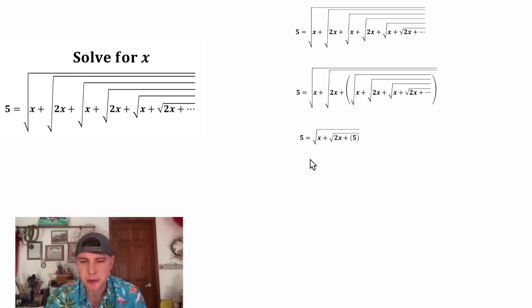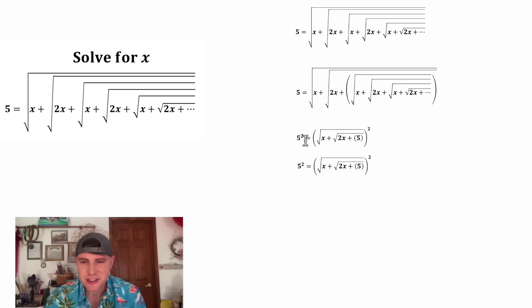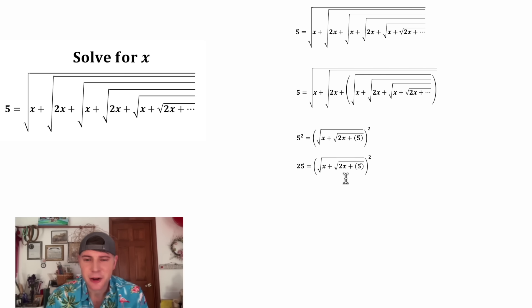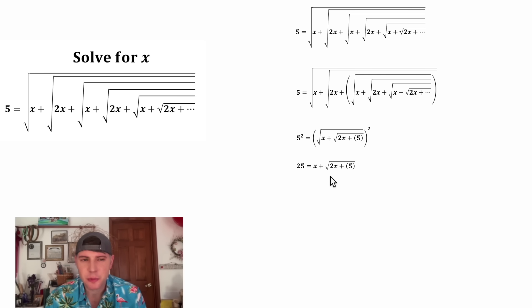In order to get rid of this square root, let's square both sides of the equation. On the left-hand side, 5 squared is 25. And on the right-hand side, the square root and the square will cancel each other out. So now we have 25 equals x plus the square root of 2x plus 5.